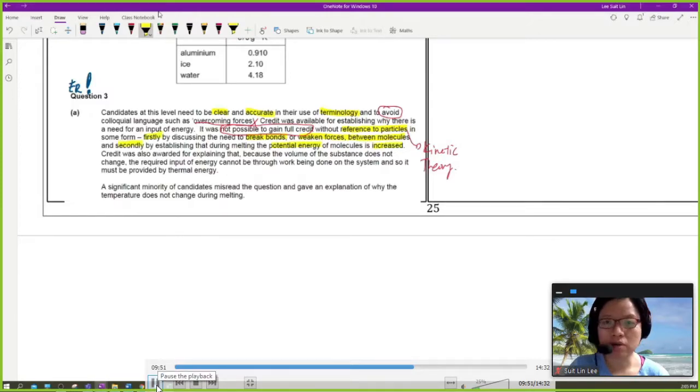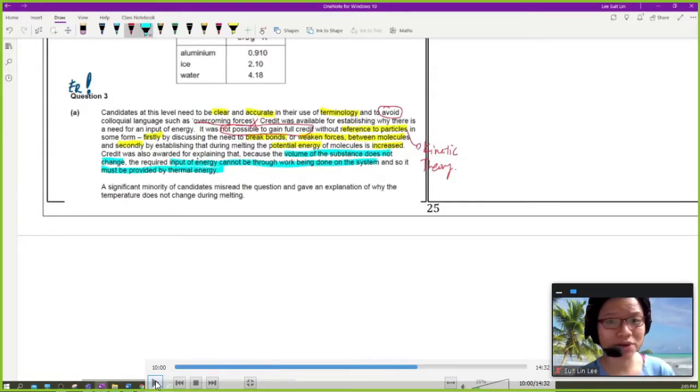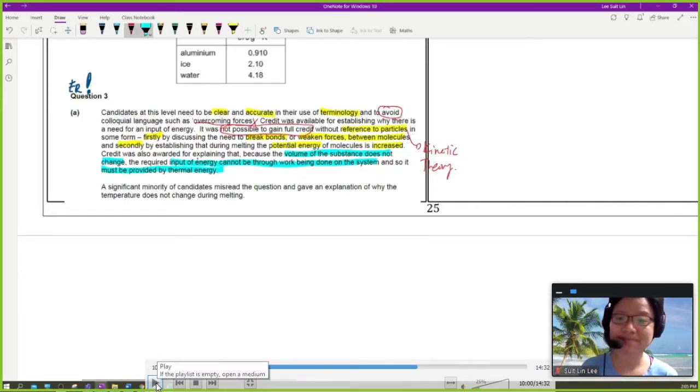It is not possible to gain full credit without reference to particles in some form. Because of kinetic theory. So first you need to discuss the bonds are broken or weakened forces between the molecules. Second, you need to talk about how during melting potential increase. Potential energy of the molecule increase. So we will also give you marks if you mention that because the volume of the substance doesn't change, we need some input energy because it cannot be done through work. So the input energy has to be provided by thermal energy. When you are done with chapter 10, this will make a little bit more sense because we actually have a law to tie all of this together. But this is also pretty logical, right?